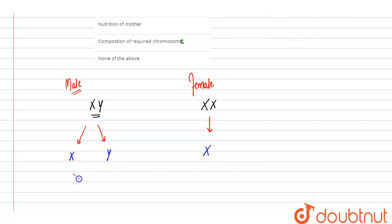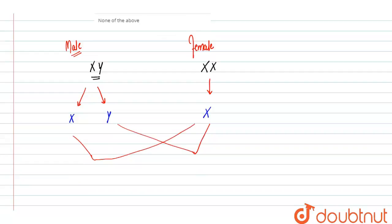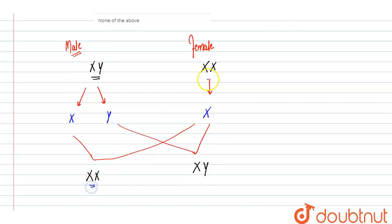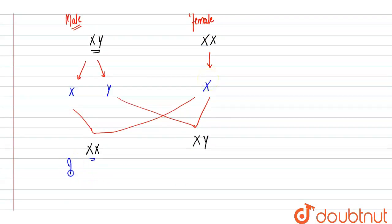Now let's look at zygote formation. Either this X will combine with the female X, or this Y will combine with the female X. In the case of a female, only one X chromosome is present. If X from the male combines with X from the female, that gives XX. If X combines with Y, that is XY.